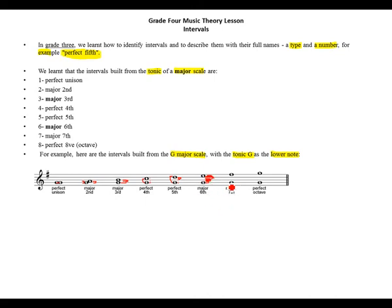Major seventh: from G to F it's a major seventh because it's 1, 2, 3, 4, 5, 6, 7. And from G to G above it's a perfect octave.